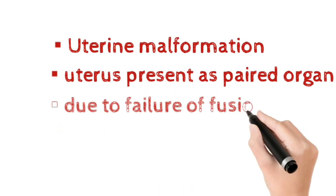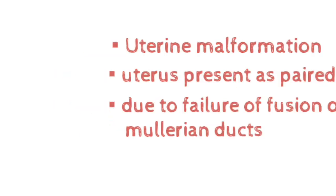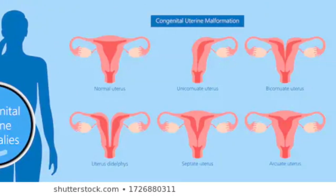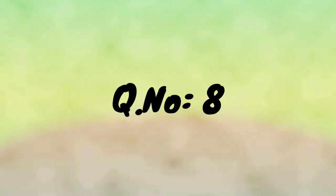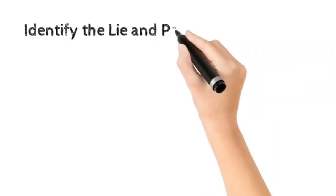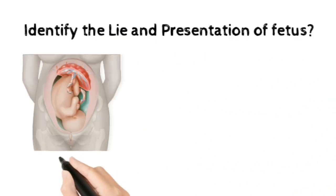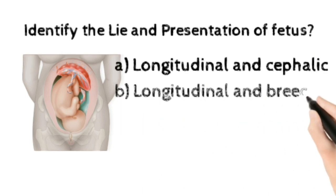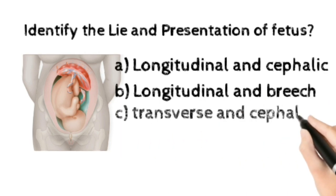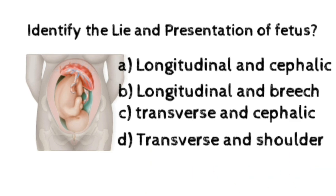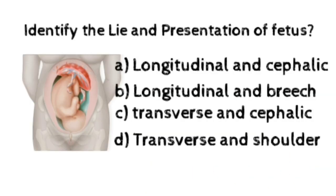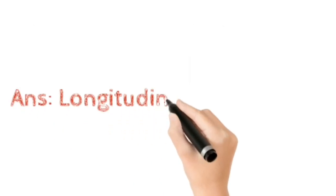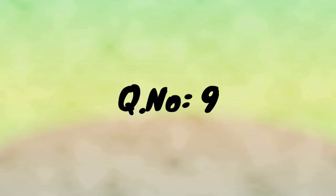Number eight: identify the lie and presentation of fetus from the image. Option A: Longitudinal and cephalic, Option B: Longitudinal and breech, Option C: Transverse and cephalic, Option D: Transverse and shoulder. The correct answer is Option A, longitudinal and cephalic.